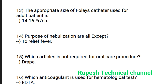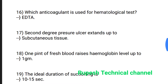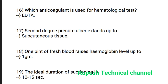Question number 13: The appropriate size of Foley catheter used for an adult patient is 14 to 16 FR by CH. Question number 14: The purpose of nebulization — all are correct except to relieve pain. Question number 15: Which artery is not required for oral care procedure?